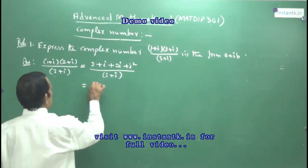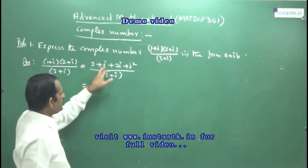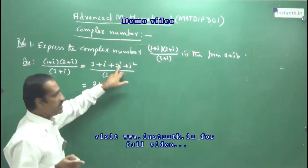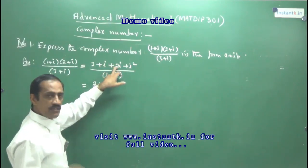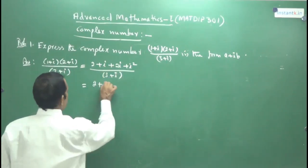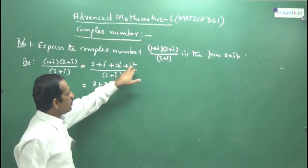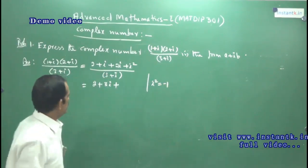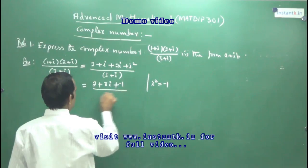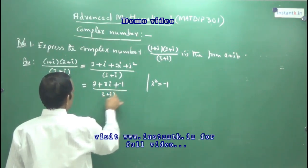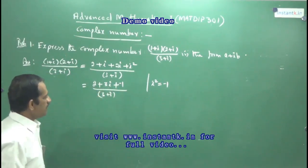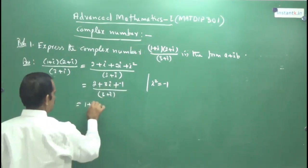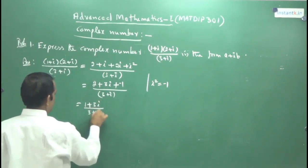After expanding, you get 2 plus i plus 2i plus i squared. Combining the i terms: 1i plus 2i gives 3i. And i squared means minus 1 — this must always be remembered. So you get 2 minus 1 plus 3i, which simplifies to 1 plus 3i, divided by 3 plus i.